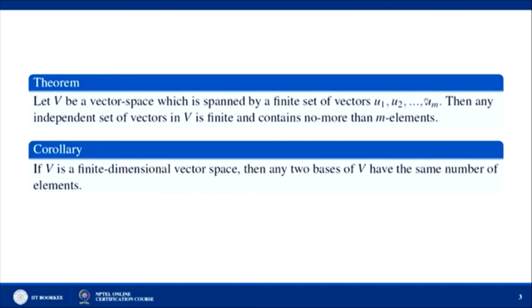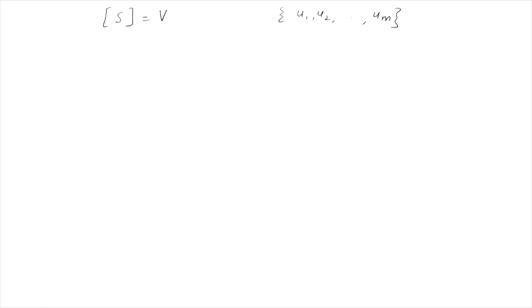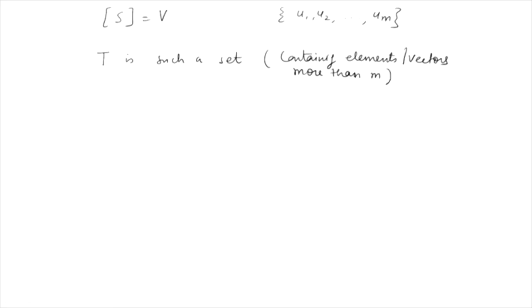Equivalently, any subset S of V containing more than m elements is always linearly dependent. To prove this, let T = {v₁, v₂, ..., vₙ} where n > m. We have to show that T is linearly dependent.